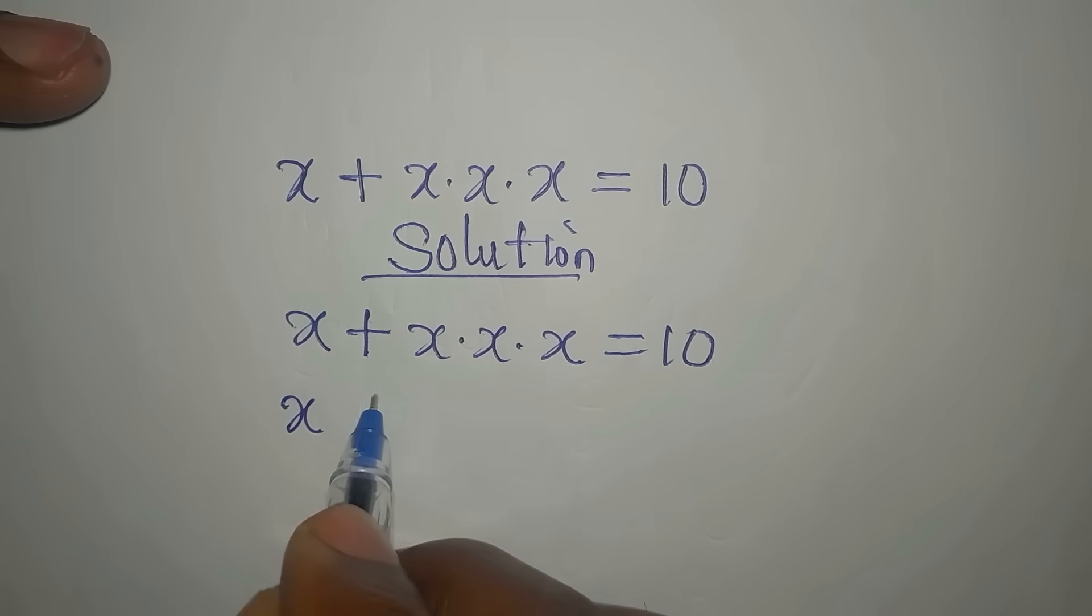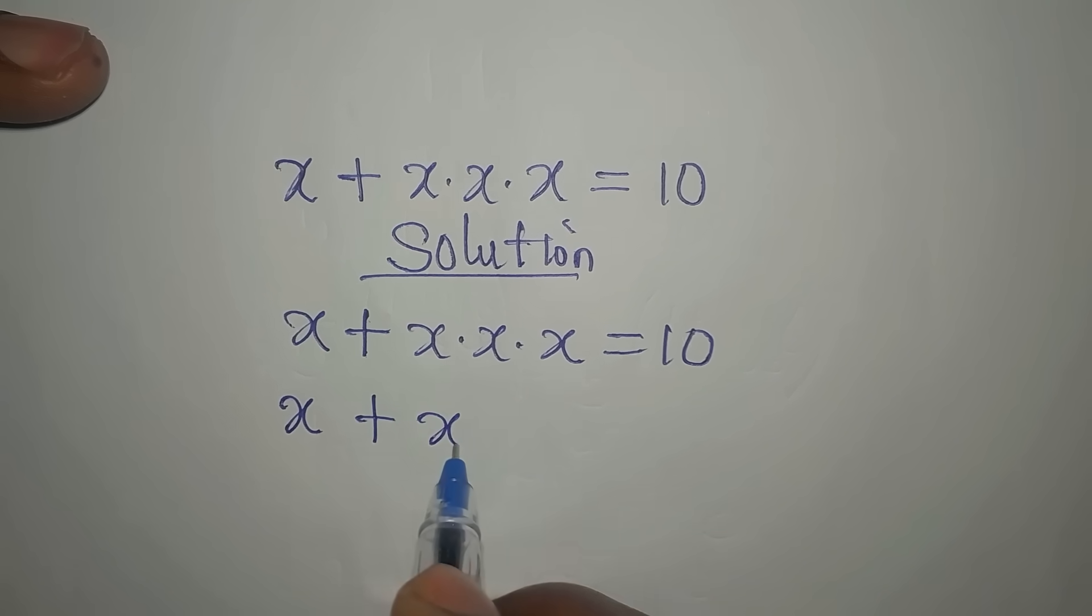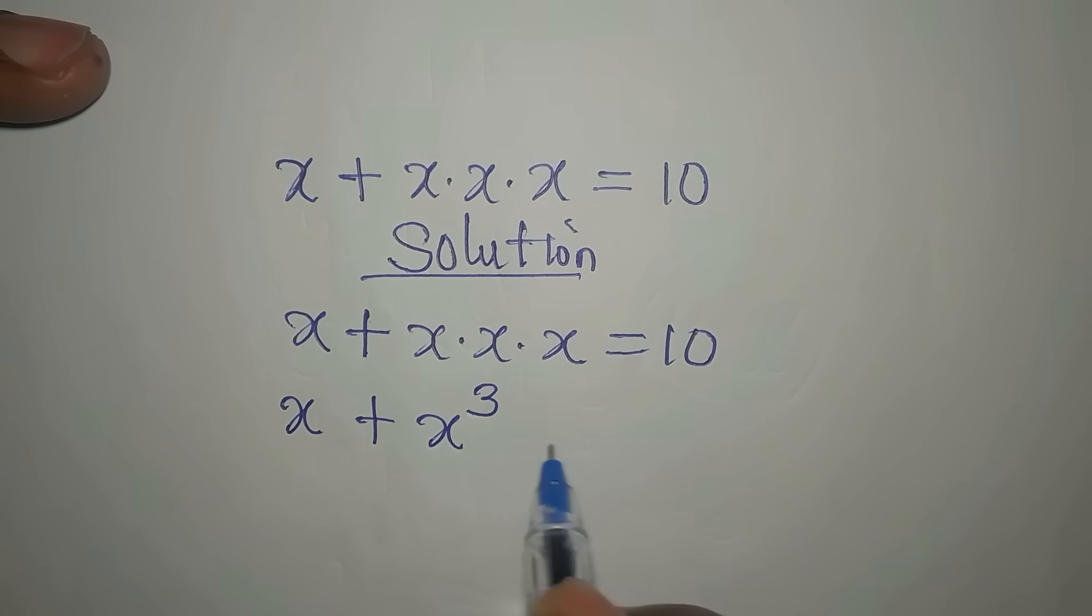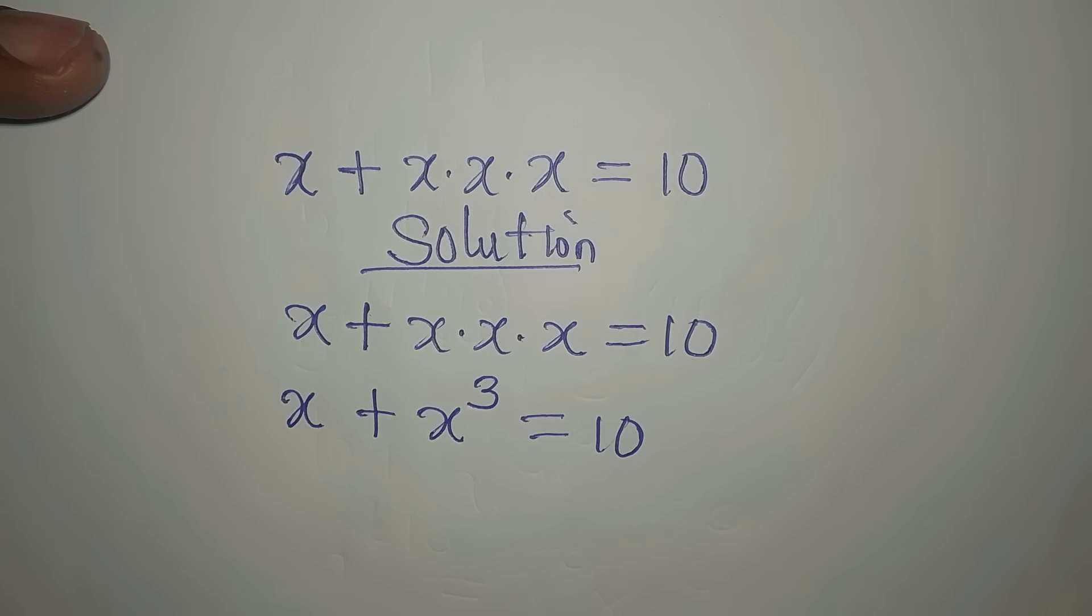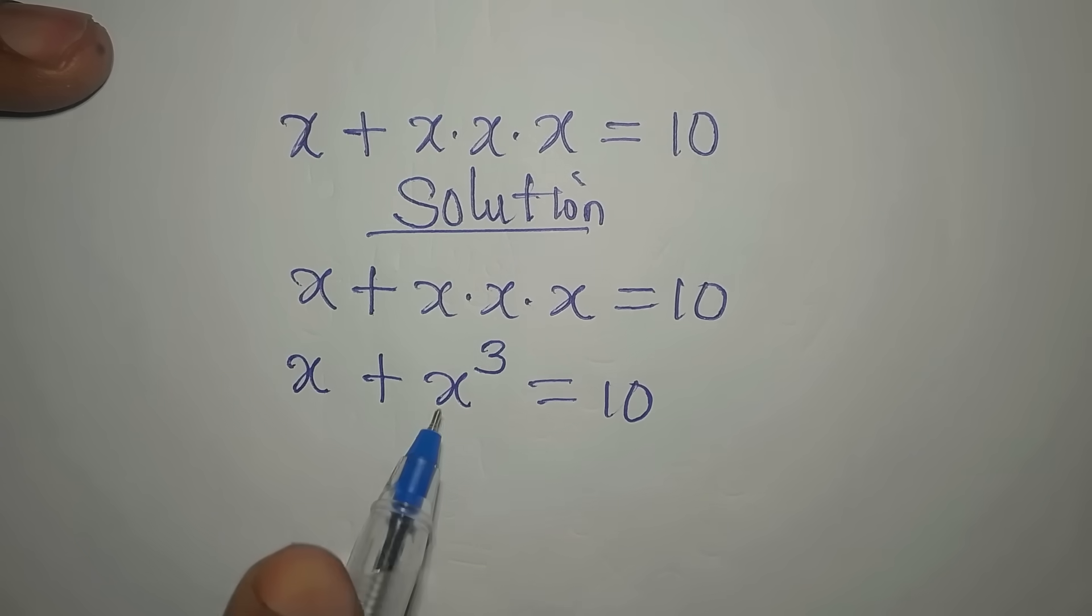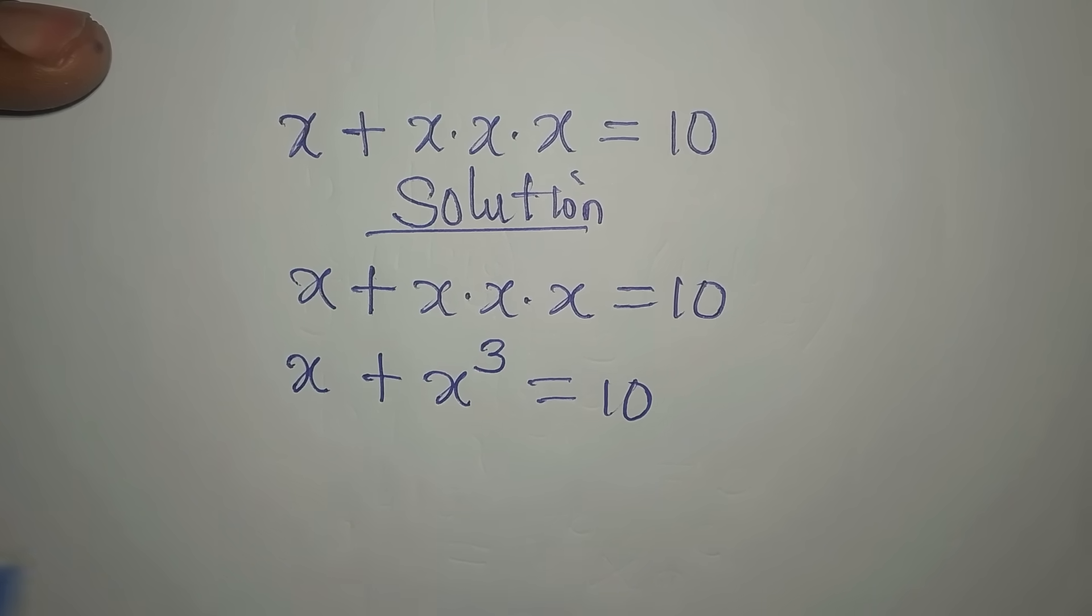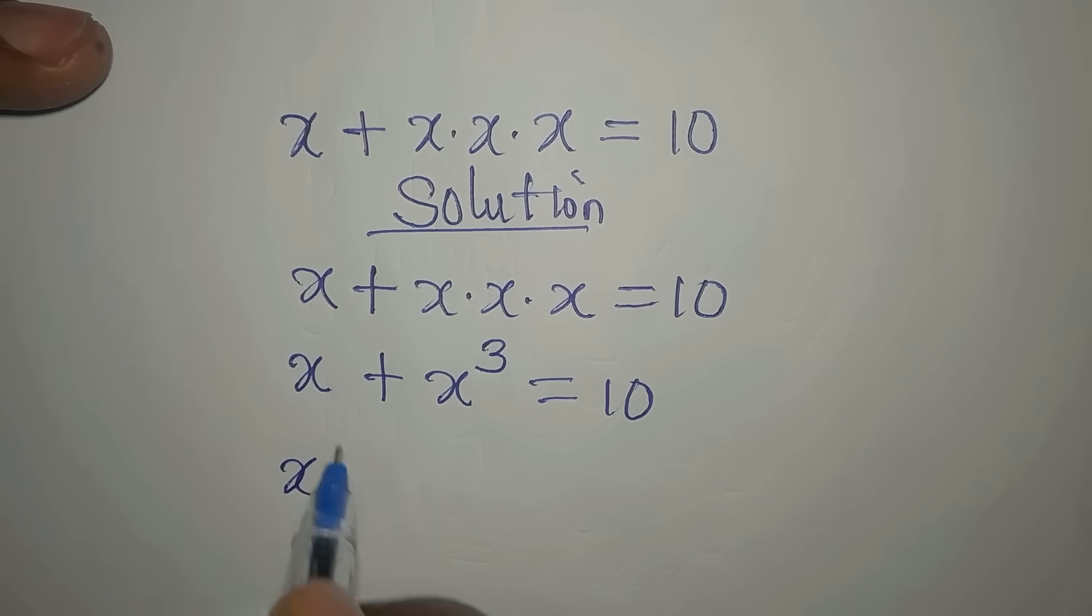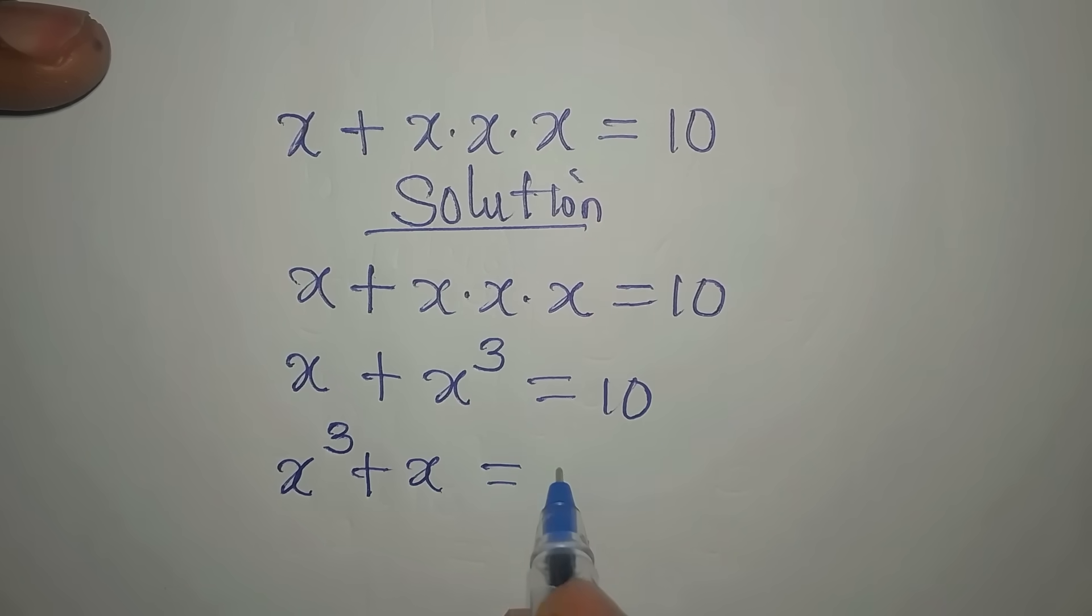I'm going to write x plus x times x times x, that would be x to the power of 3 equals 10. Mind you, I can write the one with the higher power first before this one, so I have x to the power of 3 plus x equals 10.